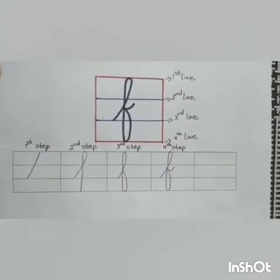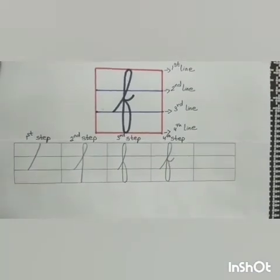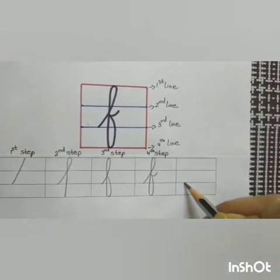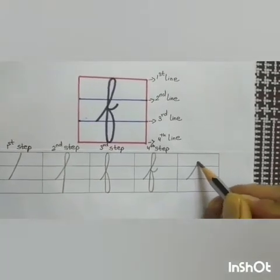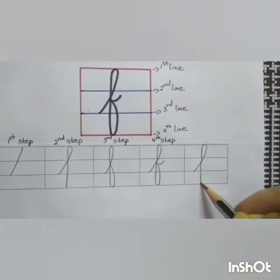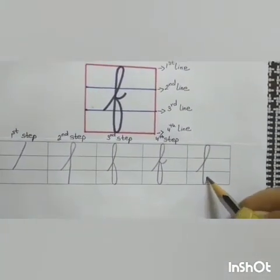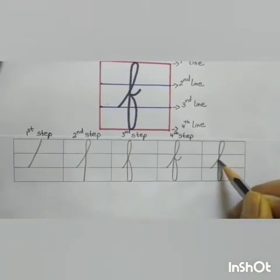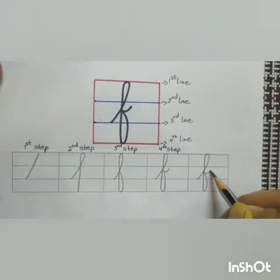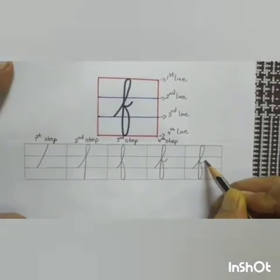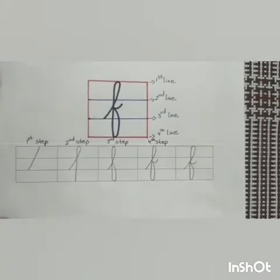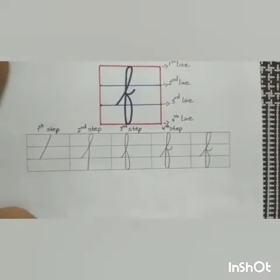So, children, this is how we write small cursive f. Let us write it again. Start from the 3rd line, go up to the 1st line. Then, make a loop and come down straight to the 4th line. Next, make a loop again and go up to the 1st line. So, children, this is how we write small cursive f within 4 lines.